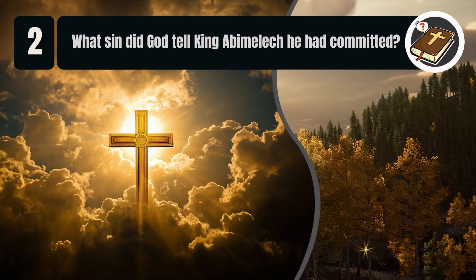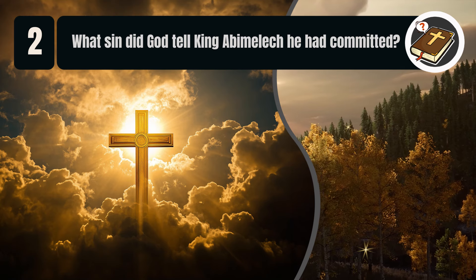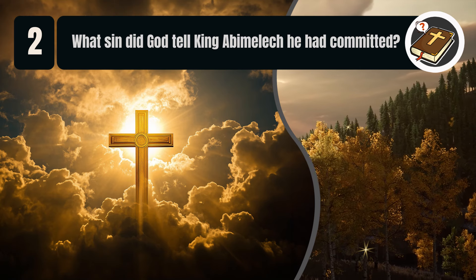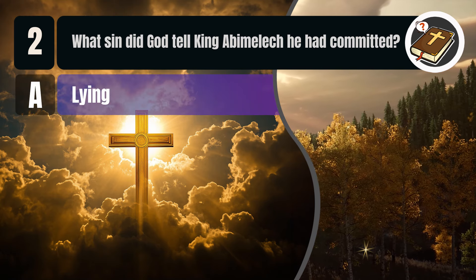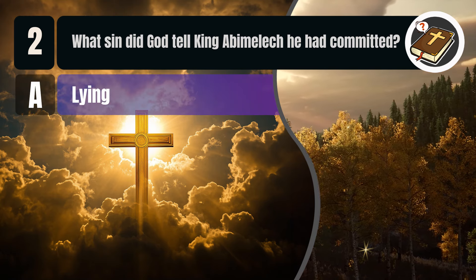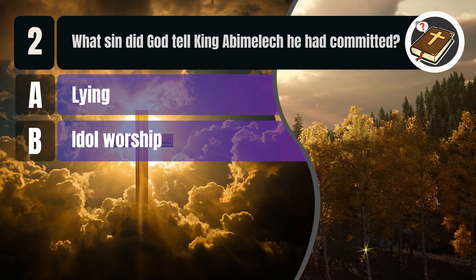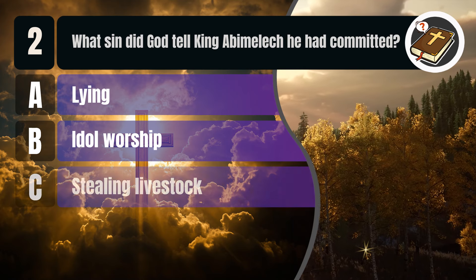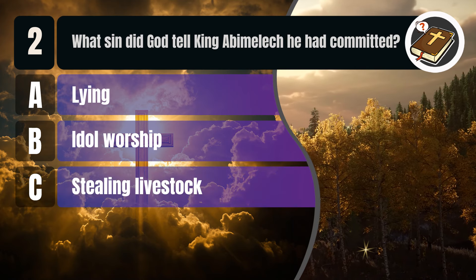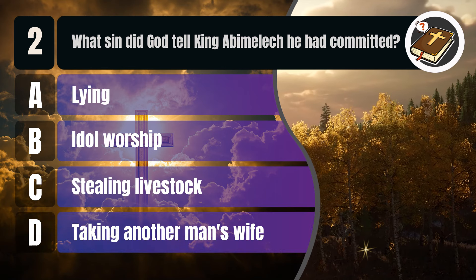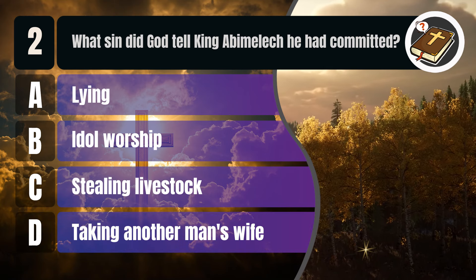Question 2. What sin did God tell King Abimelech he had committed? A. Lying. B. Idle worship. C. Stealing livestock. D. Taking another man's wife.